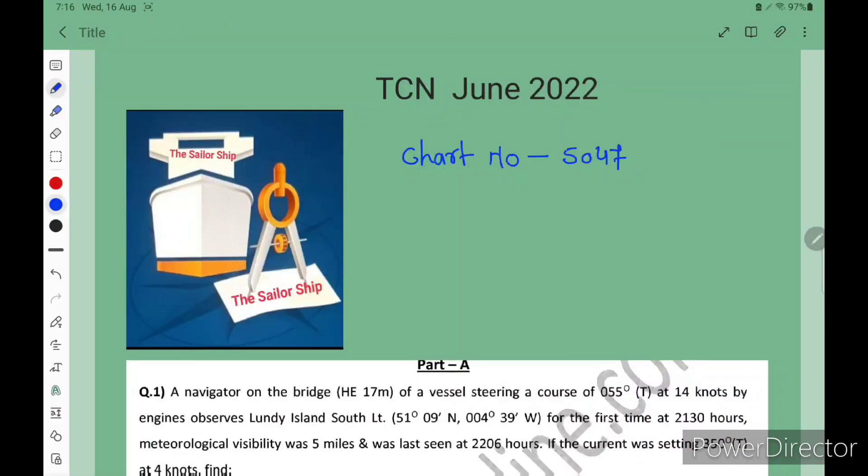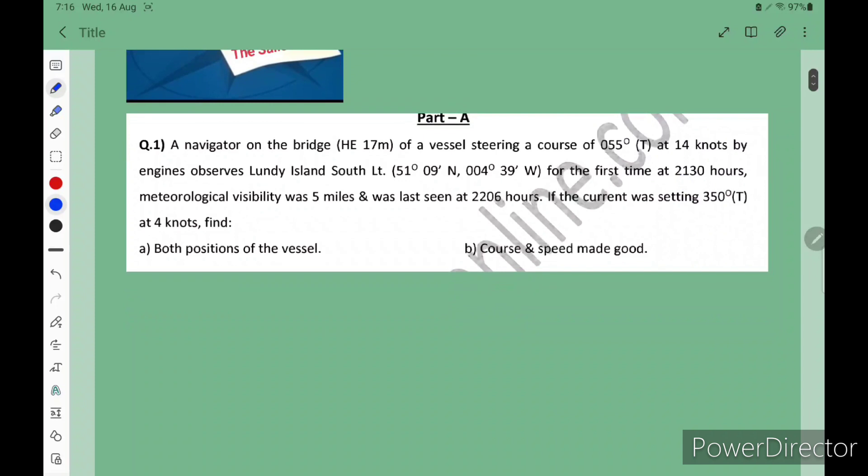Let's discuss TCN June 2022 paper, chart number 5047. The first question is: A navigator on the bridge height 17 meters of a vessel steering a course of 055 degrees true at 14 knots by engine observes Lundi Island South Light. Position was given for the first time at 2130 hours. Meteorological visibility was 5 miles and was last seen at 2206 hours. If the current is setting 350 true at 4 knots, find both positions of the vessel, course and speed made good.